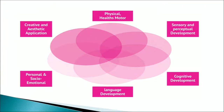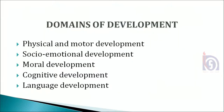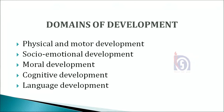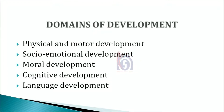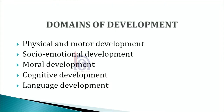Domains of development refer to different areas or aspects in which children's development takes place. The various domains of development are: physical and motor development, which includes gross and fine motor skills; social-emotional development, which refers to an understanding of self and the social environment, managing and expressing emotions in a socially desirable manner; moral development, which refers to the sense of right and wrong; cognitive development, which pertains to thinking and understanding of various concepts and phenomena; and language development, which includes communication, emergent and early literacy, focusing on listening, comprehension, oral or speaking skills, and writing.